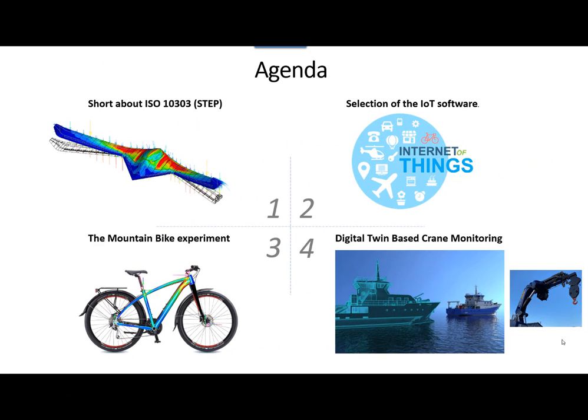We have divided the presentation in four parts. We'll start with a short introduction to the ISO 10303 STEP standards, and we will focus especially on an extension of AP209. Secondly, we will introduce you to the Arrowhead IoT CPS Open Source Framework, and the final part of the presentation will be two real-world digital twin examples: first, the mountain bike experiment, and then the Gunnerys ship and its crane, both fully utilizing standards in all aspects.